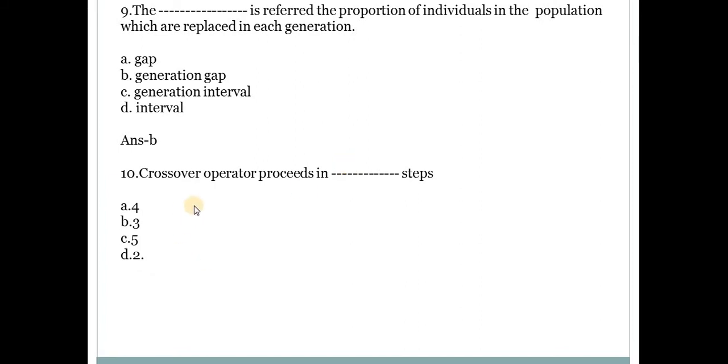Next question. Crossover operator proceeds in dash steps. Answer is B, 3. It proceeds in total 3 steps.